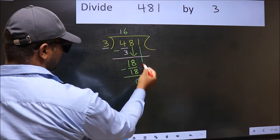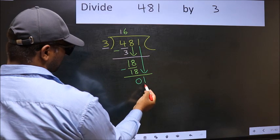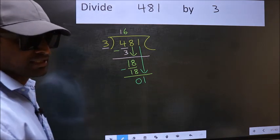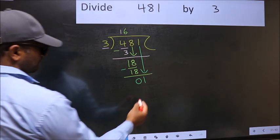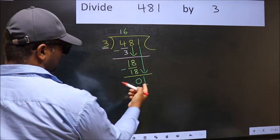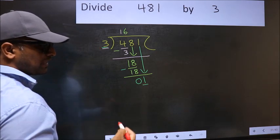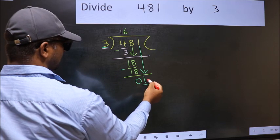After this, bring down the beside number. So 1 down. After this step, the mistake happens. And the mistake is this. Here we have 1 and here 3. 1 is smaller than 3. So what many do is, they directly put a dot and take 0 here.